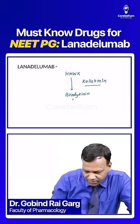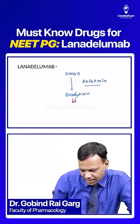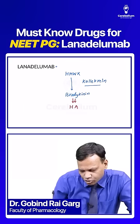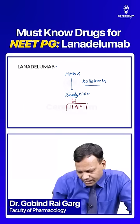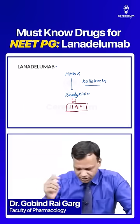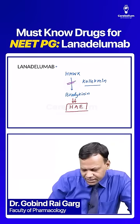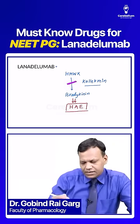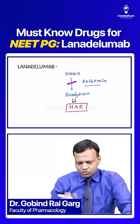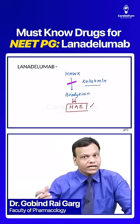Excessive bradykinin is responsible for a condition known as hereditary ingeoneurotic edema. So what we have done, we have developed a drug which can inhibit calicrine. If we inhibit calicrine, then bradykinin will not be produced, and we can treat hereditary ingeoneurotic edema.